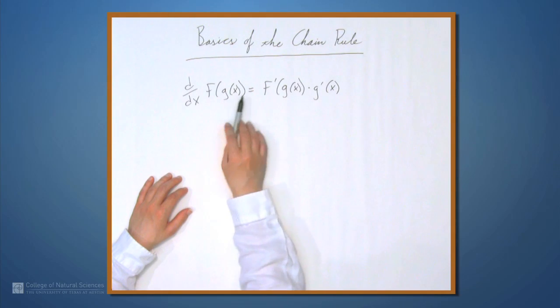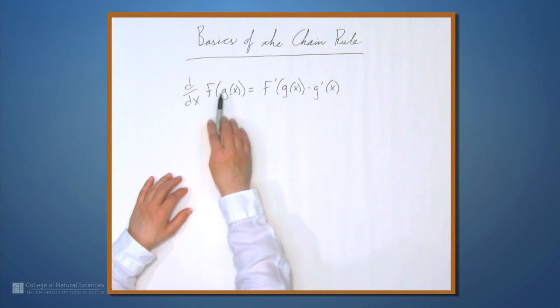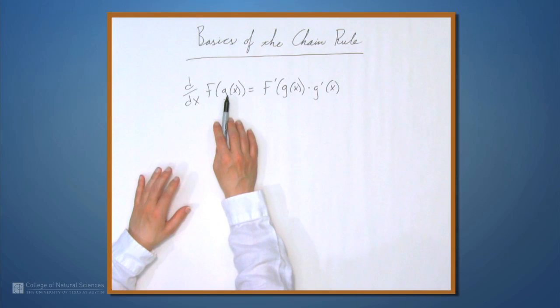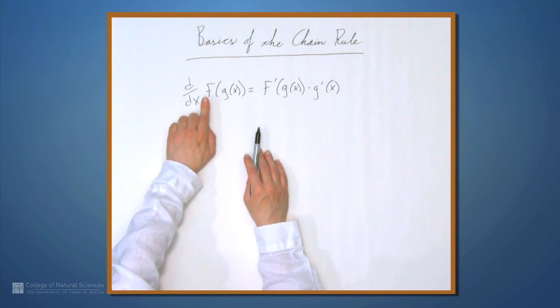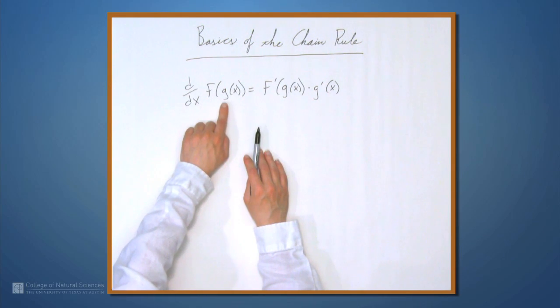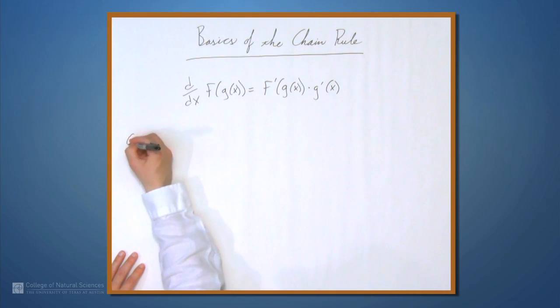So whenever we apply this, we need to know which function is f and which function is g, or more generally, which function is the outer function and which one is the inner function. Sometimes it'll be clear, sometimes it won't be. Let's look at an example.